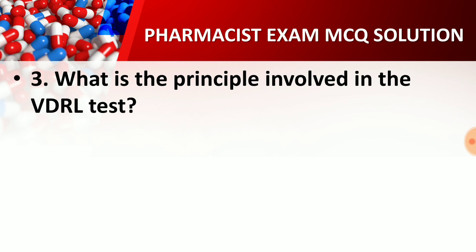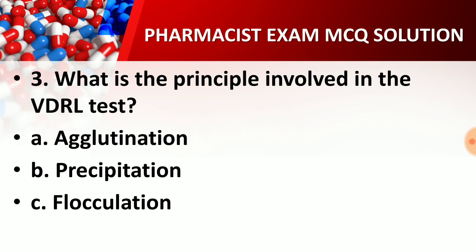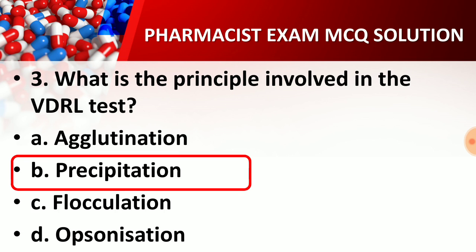Question number three: What is the principle involved in the VDRL test? Options are — option A, agglutination; option B, precipitation; option C, flocculation; option D, opsonization. The right answer is option B, precipitation. The principle involved in the VDRL test is precipitation.